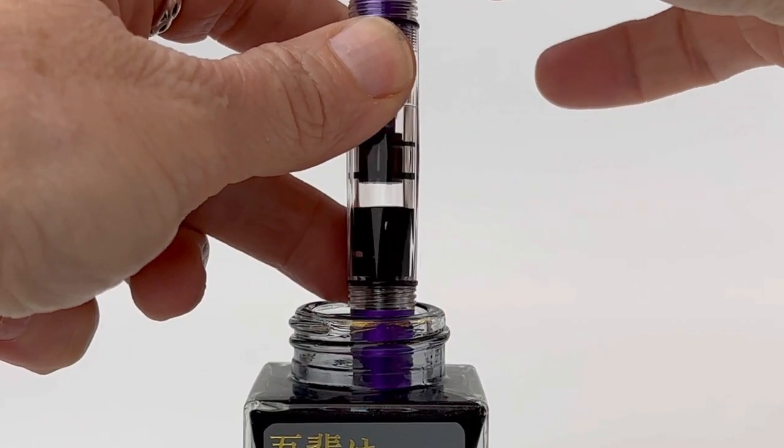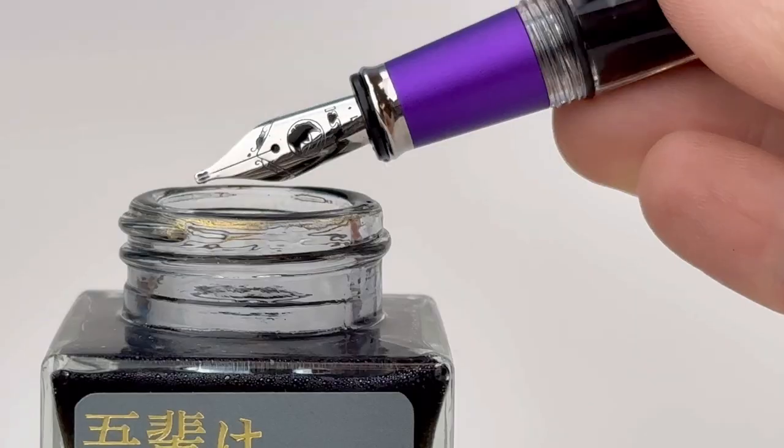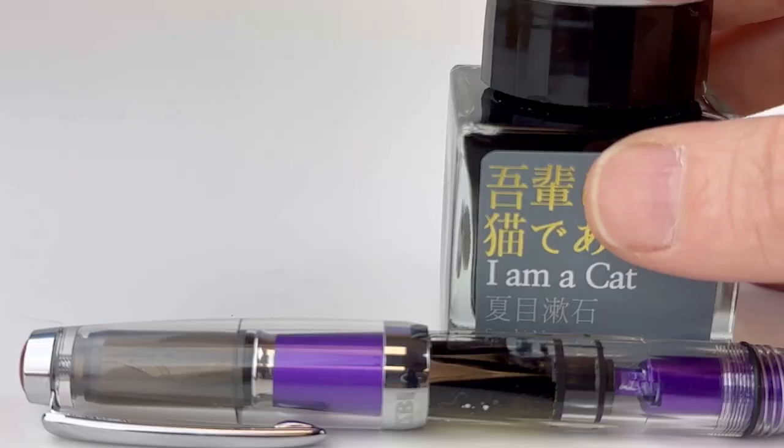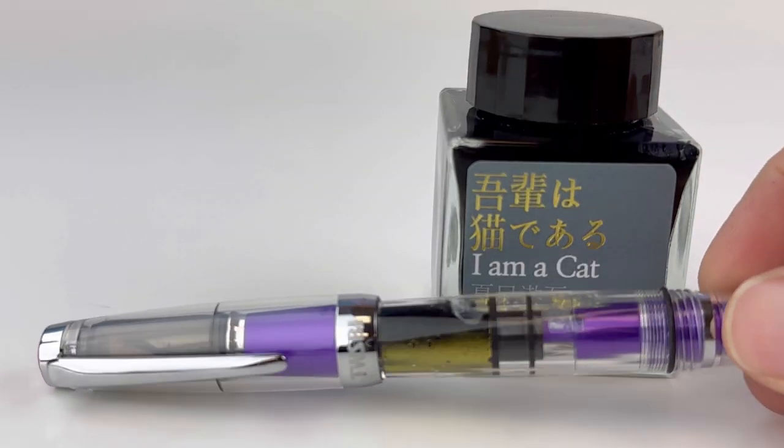This is the piston filler in action, pulling some ink up into the pen. You can use any fountain pen safe bottled ink with your TWSBI's.